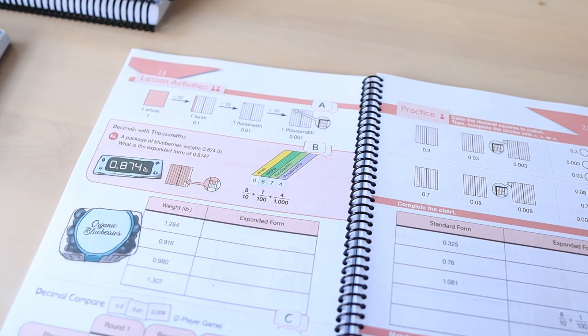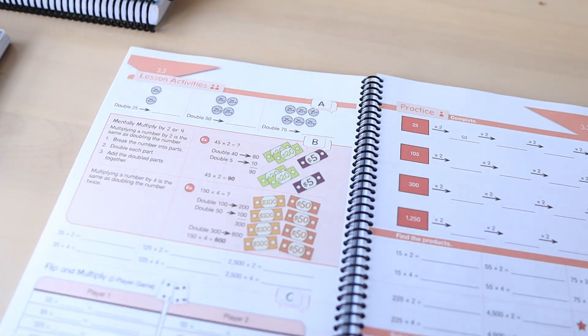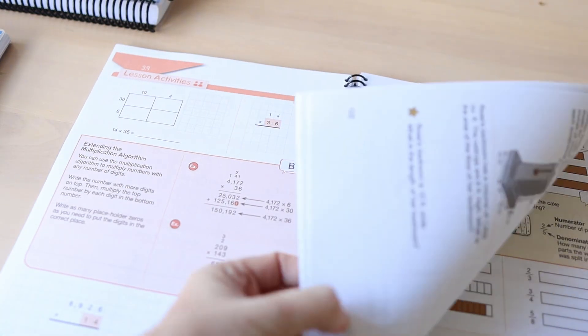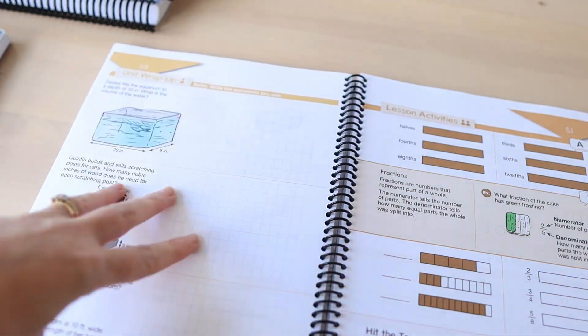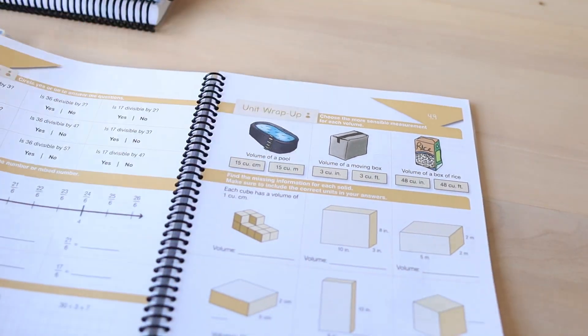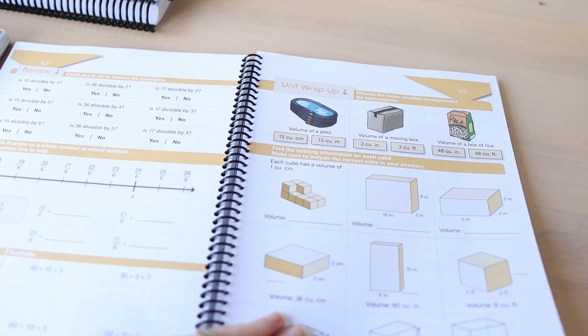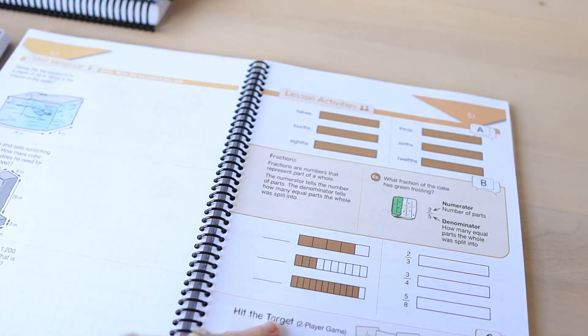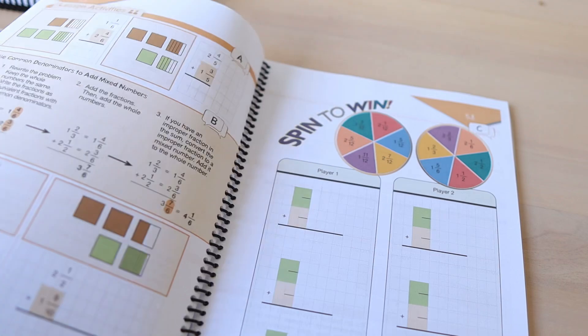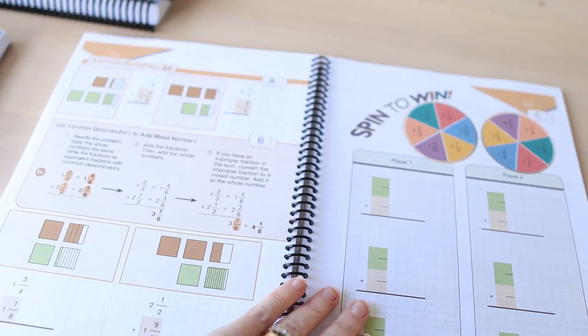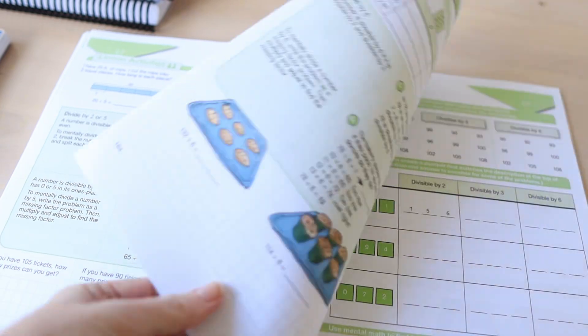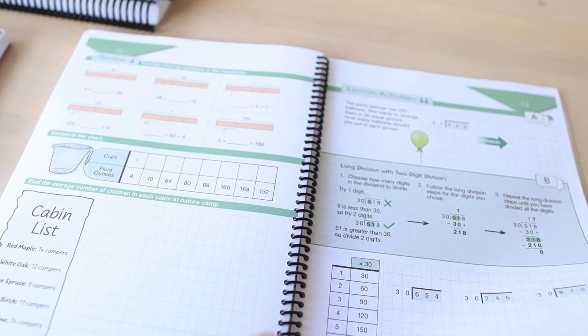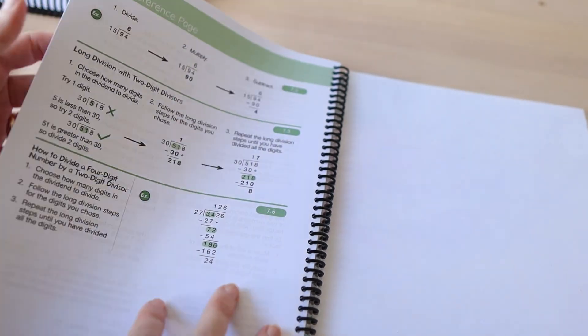I'm just going to flip through a little bit so you can see the kinds of things that they're covering in here. There's fraction work, there's more multiplication, there's long division in this, you've got your unit wrap-ups. Your unit wrap-ups are technically optional. I have always done them with my kids as an assessment to see if they understand what they've been taught throughout the unit. There's more geometry, decimals do come in here as well, lots more division, word problems, measurements as well.